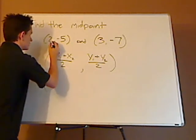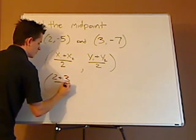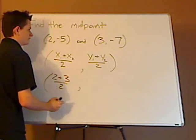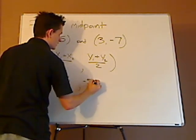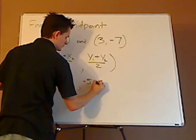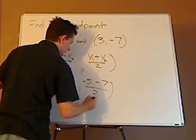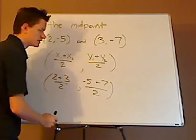So your x's: 2 plus 3 over 2, comma, your y's: negative 5 plus negative 7 over 2. See if that can simplify.